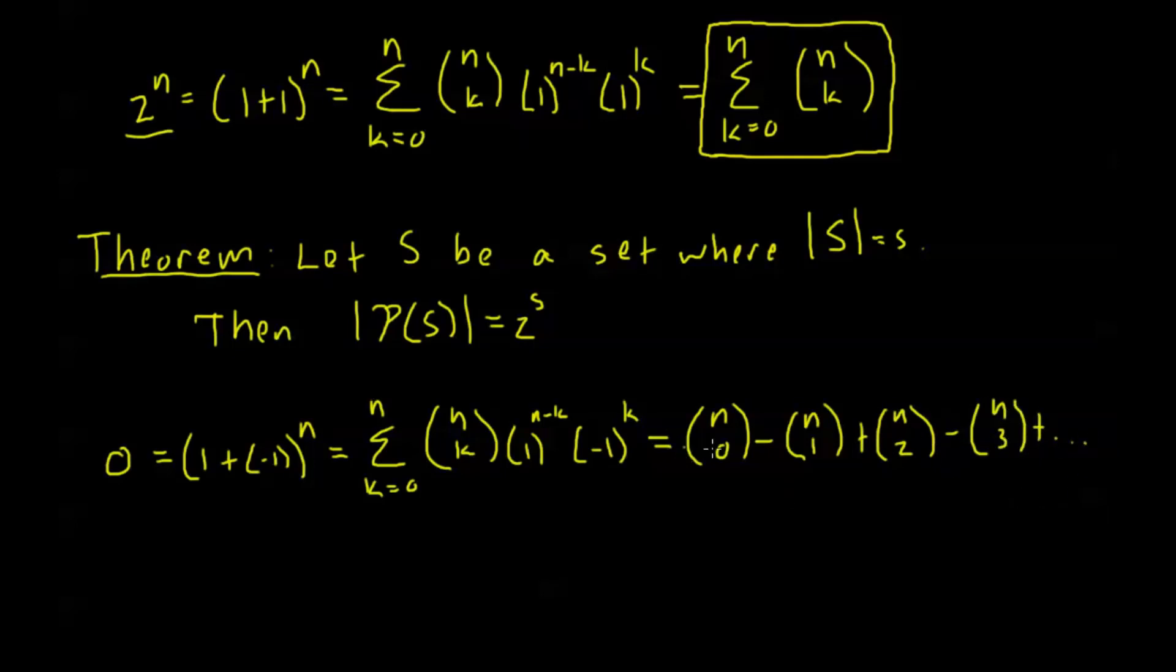Now because this sum equals 0, I can add my odd value of k choice functions to both sides, and I get this result that all of the odd values of k, n choose 1 plus n choose 3 plus and so on, is equal to the sum of the coefficients for even values of k, n choose 0 plus n choose 2 plus and so on. So all of my odd k choice functions are equal to the sum of all of my even k choice functions.